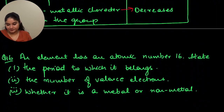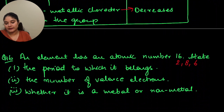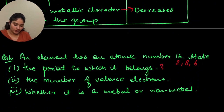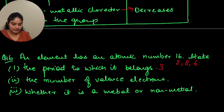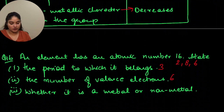An element has atomic number 16, so the configuration is 2, 8, 6. The period to which it belongs: it has 3 shells, so period 3. The number of valence electrons: 6 valence electrons. Whether it is a metal or a non-metal: since it has 6 electrons in the outermost shell, it can easily accept electrons to get the closest octet, therefore it is a non-metal.